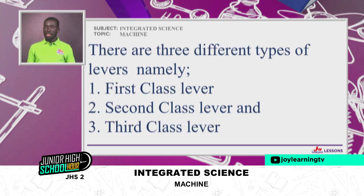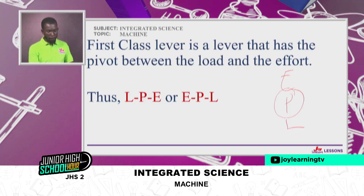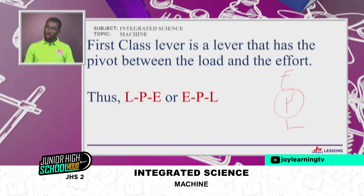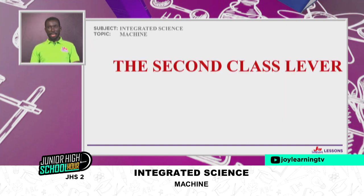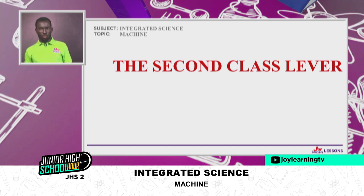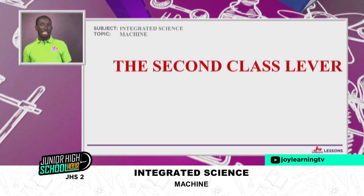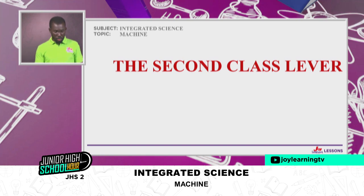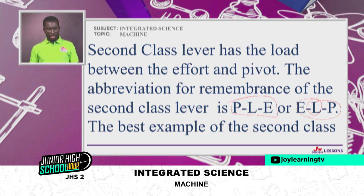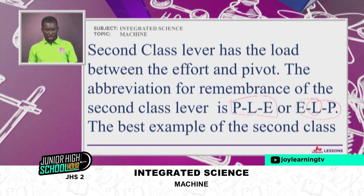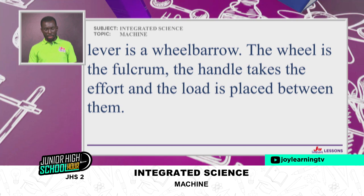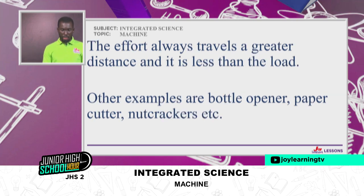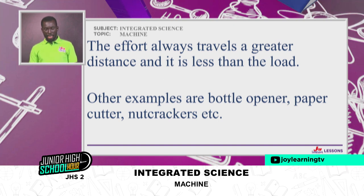In all levers, the position of the pivot, effort, and load determine the class of lever — first class, second class, and third class lever. Every first class lever has the pivot in between the load and the effort, with examples including a pair of scissors, a secateur, a plier, and a surgical scissor. The second class lever has the load between the effort and the pivot — abbreviation P-L-E. The best example is the wheelbarrow: the wheel is the fulcrum, the handle takes the effort, and the load is placed in between. The effort always travels a greater distance and is less than the load.